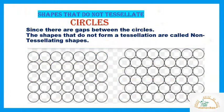There are some shapes that do not tessellate. Circles are an example of shapes that do not tessellate. In these figures, you can clearly see that the circles do not fit into each other but instead there are gaps between the circles. The shapes that do not form a tessellation are called non-tessellating shapes.